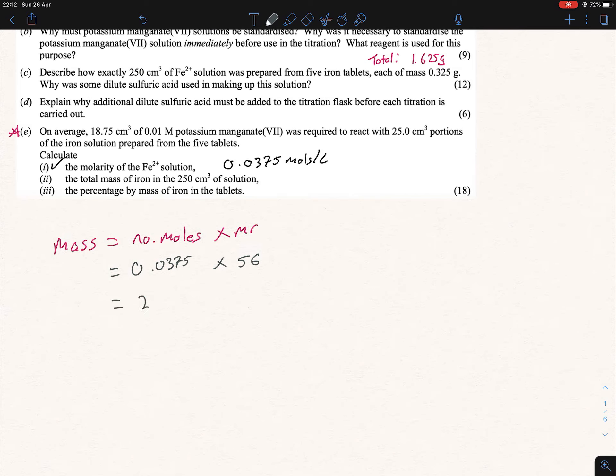So we'll write that down: 0.0375. If we do that out, you get 2.1 grams per liter. That's really important because you put the liter over here, you must continue with the liter over here. The question asks for the total mass of iron in 250 cm³, so 250 goes into a liter four times. All I have to do is 2.1 divided by four, which equals 0.525 grams per 250 cm³.